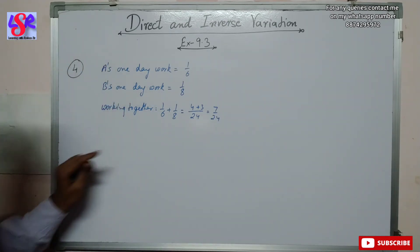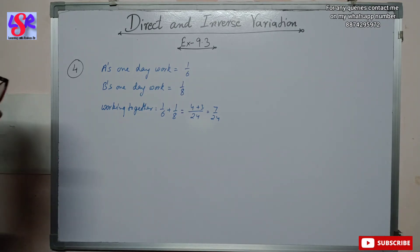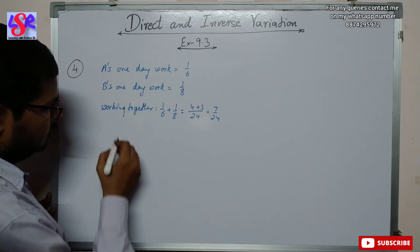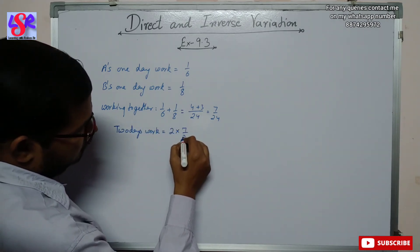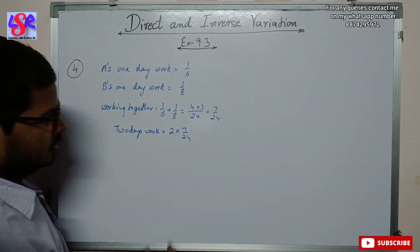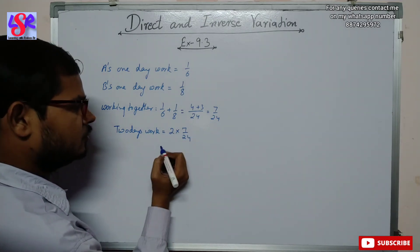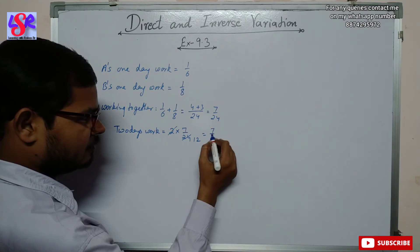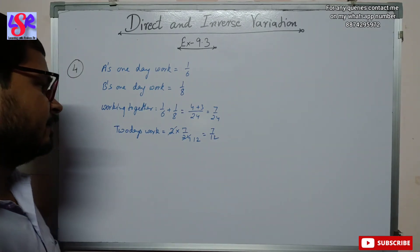So if they work together in one day, seven upon twenty-four of the work is completed. For two days, the work completed equals two into seven upon twenty-four. Simplifying by dividing by two gives seven upon twelve. So seven-twelfths part of the work is completed by them in two days.